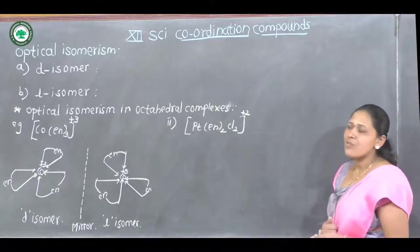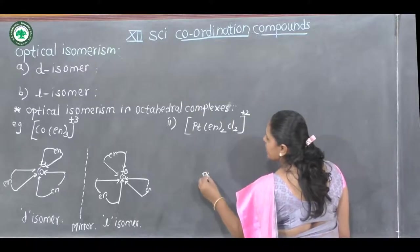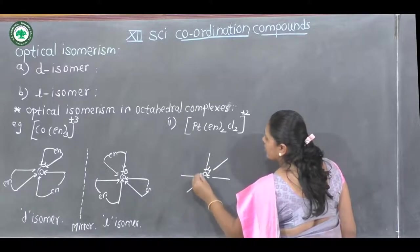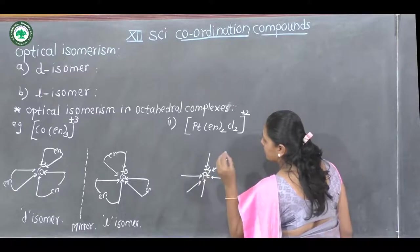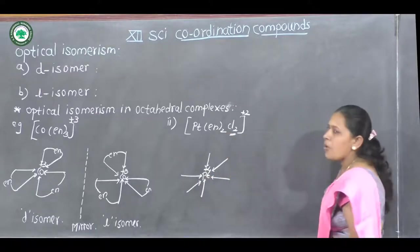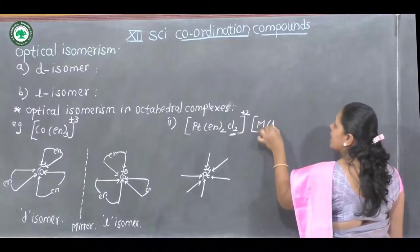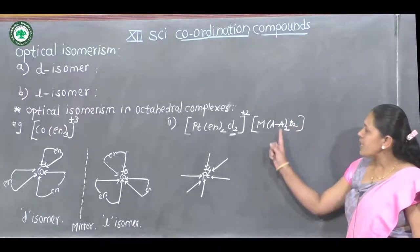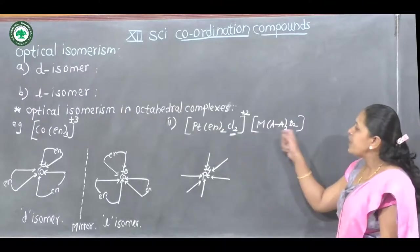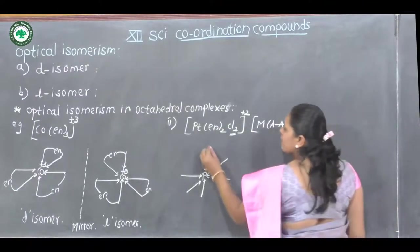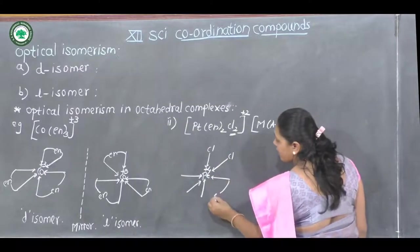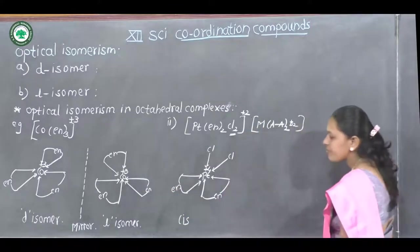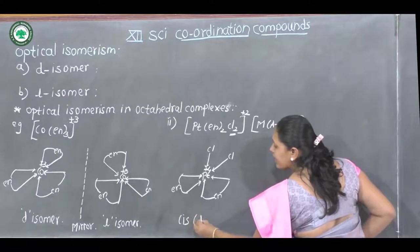This complex is of the type MA₂B₂, where AA is the bidentate ligand ethylenediamine and B₂ is dichloro. If the two chloro groups are at the 1,2 positions with the ethylenediamine ligands occupying the remaining positions, this gives the cis isomer, which is also the D-isomer.